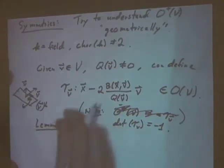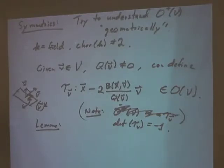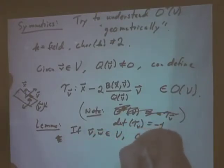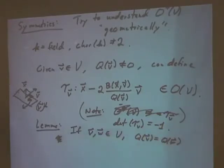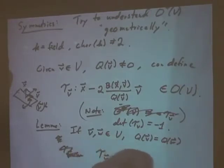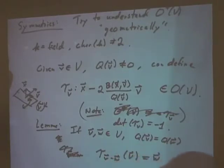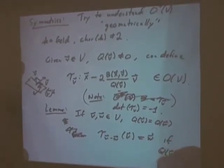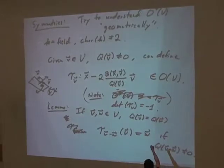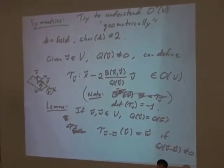To see how reflections act on vectors, it's useful to ask: given vectors v and w in V with Q(V) = Q(W), can you find a reflection taking v to w? The lemma is that tau_{V−W} takes v to w, provided Q(V−W) is non-zero. This is very useful because it lets you explicitly use reflections to move around in the vector space and act within the orthogonal group.